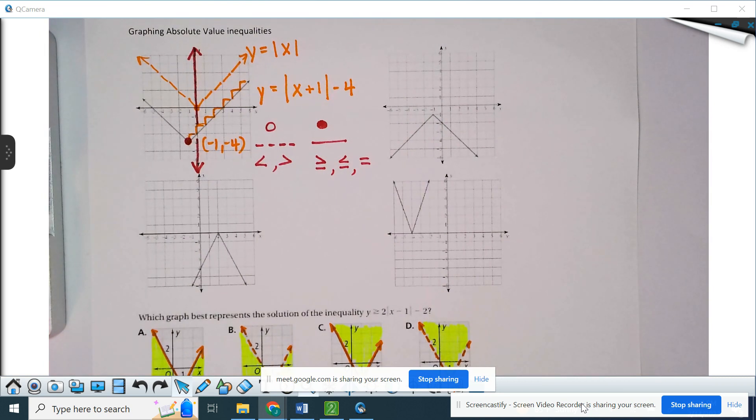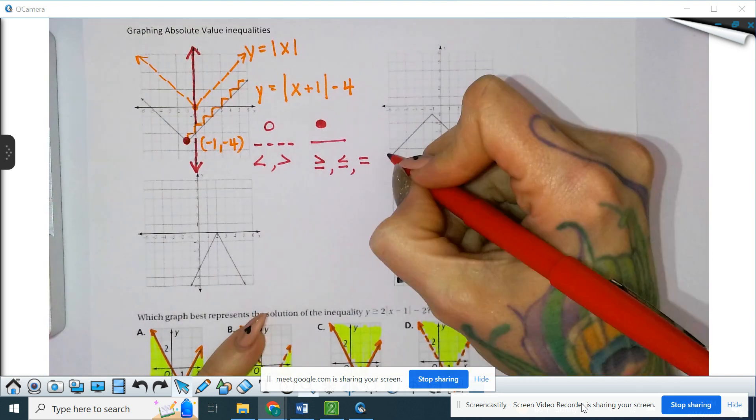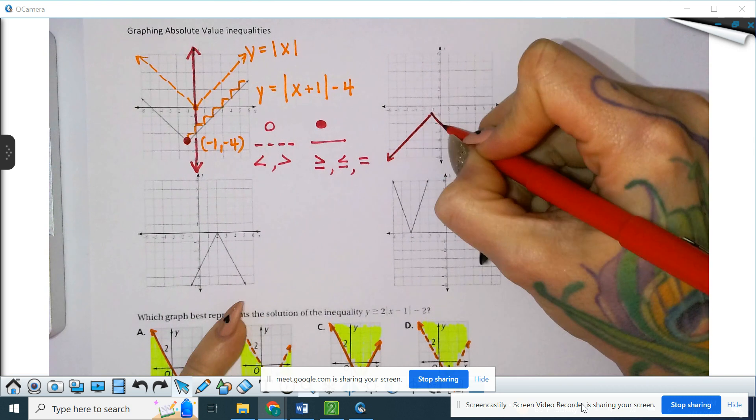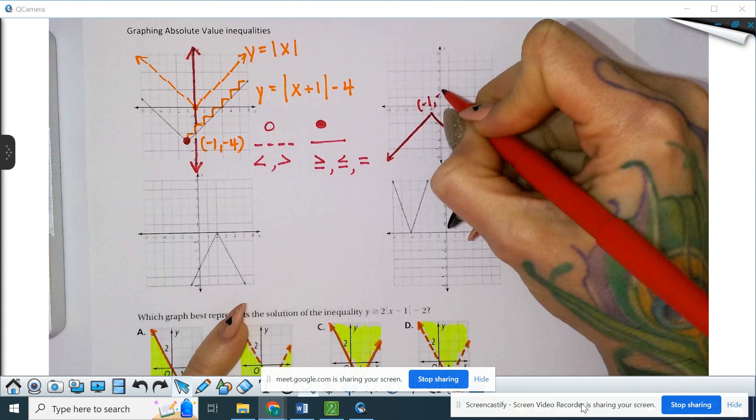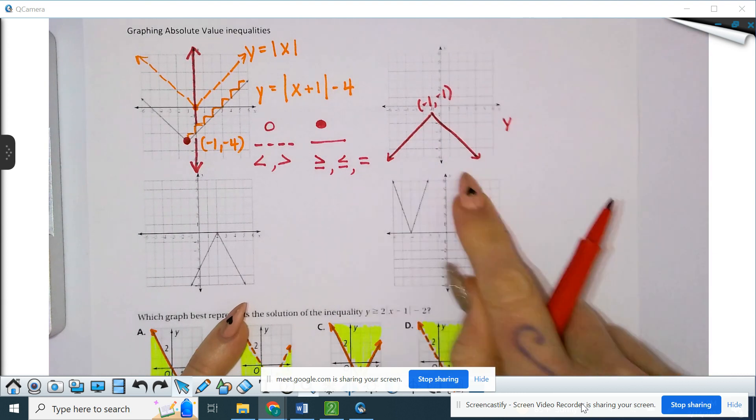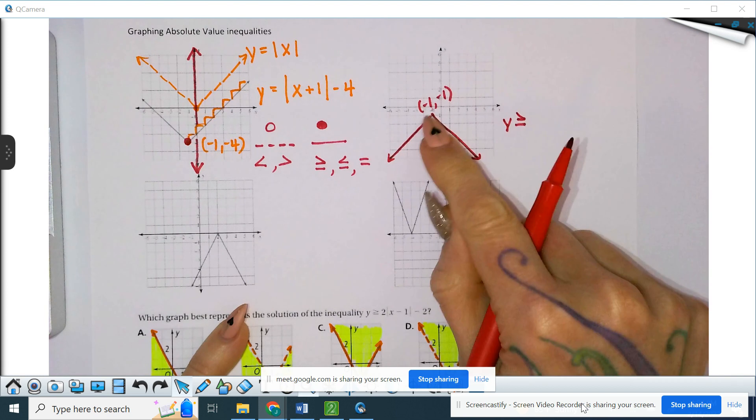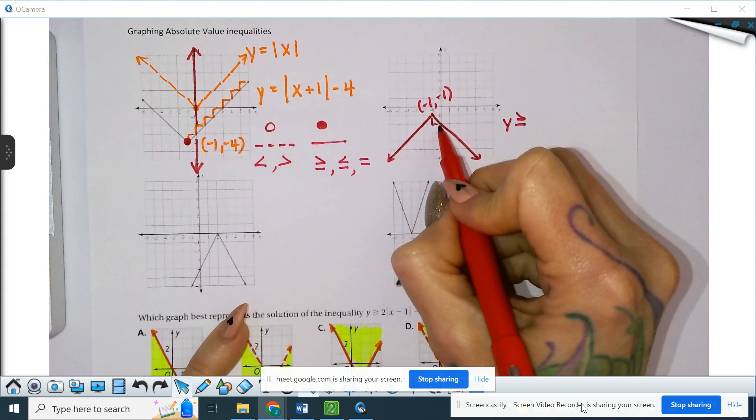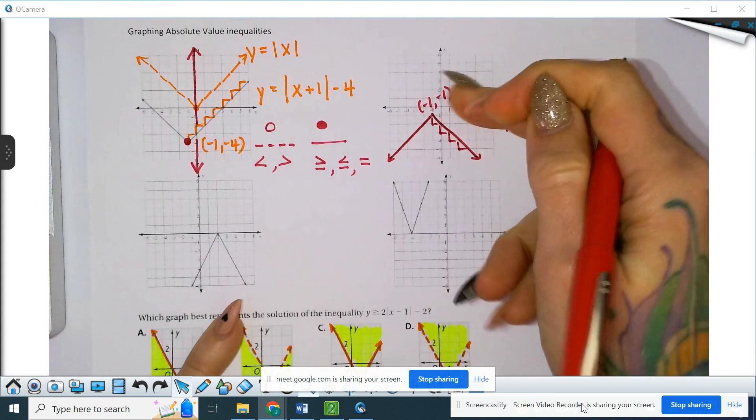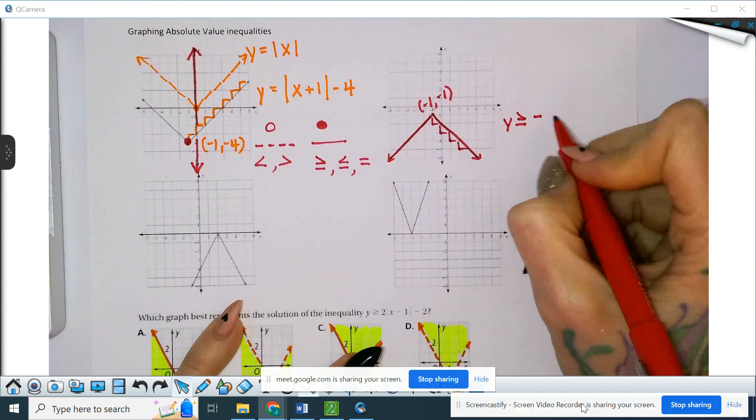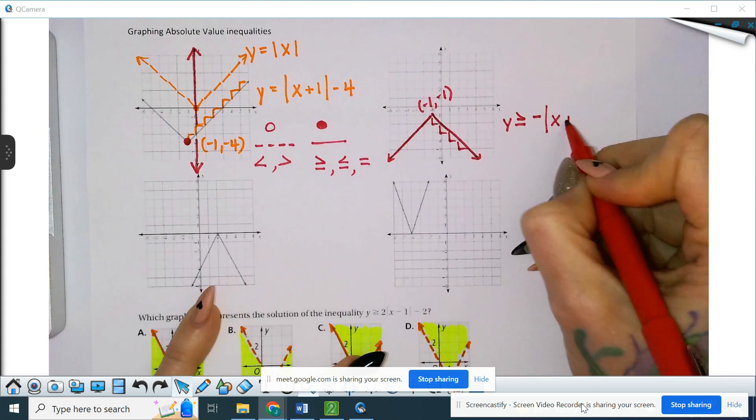All four of these are the equal to kinds, but we could make this one into what we want. Our vertex here is a negative one, negative one. If we write that equation, we're going to do a greater than or equal to, and that's why we have a solid line. It is still a one-to-one slope.